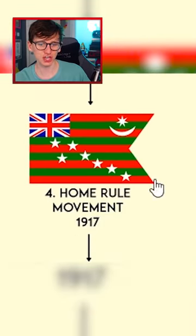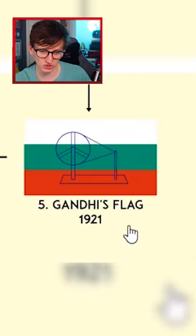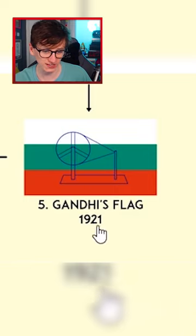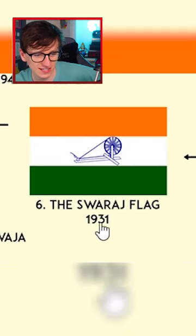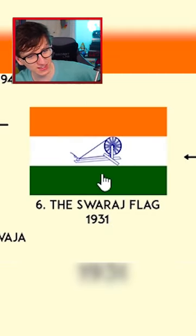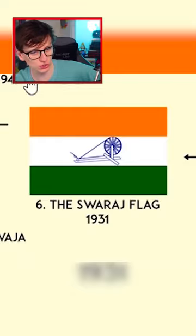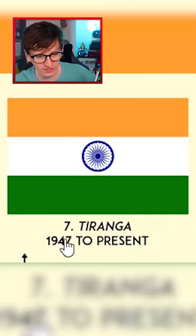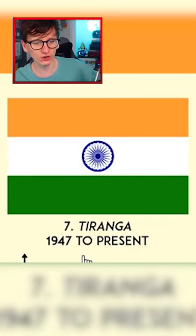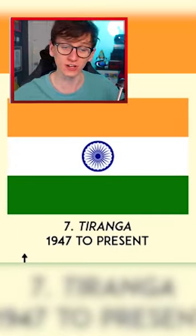It has a jazzy shape, moving on to Gandhi's flag in 1921, the Swaraj flag in the 1930s, and then that's very close to the triangle flag they've used since 1947. Interesting.